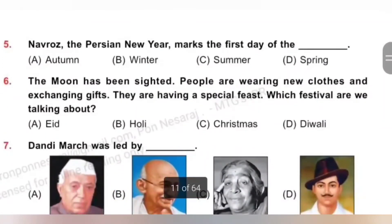Question 5: Nowruz, the Persian New Year, marks the first day of the ___. Options: A. Autumn, B. Winter, C. Summer, D. Spring. Nowruz, the Persian New Year, marks the first day of spring. Option D is the correct answer.